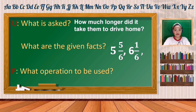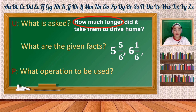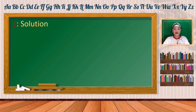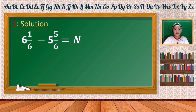What operation should be used? Let us go back to the question: how much longer did it take them to drive home? The keyword is 'how much longer' or 'how much more', meaning we need to use subtraction. The number sentence is 6 and 1/6 minus 5 and 5/6 equals n.